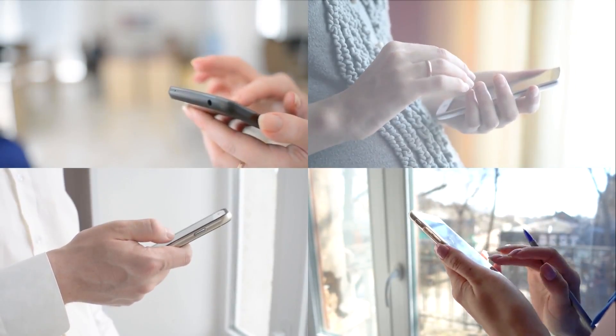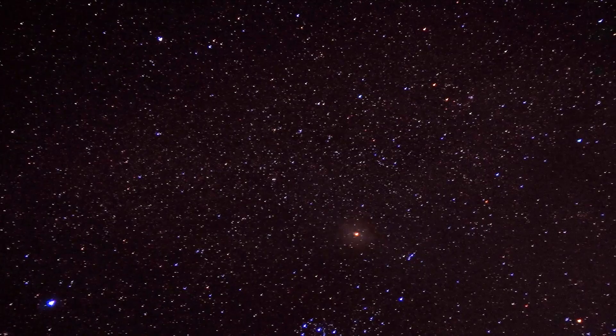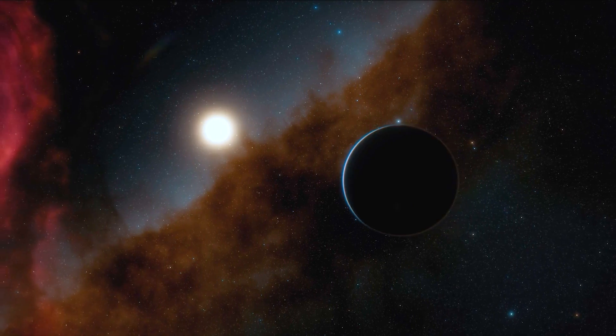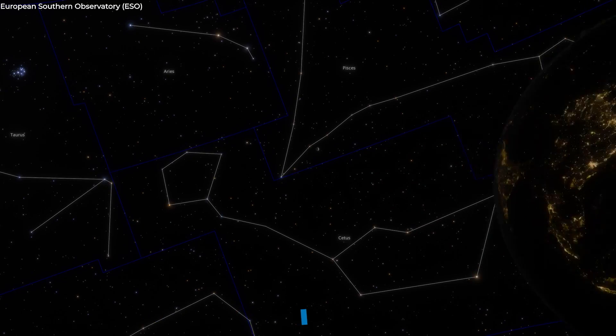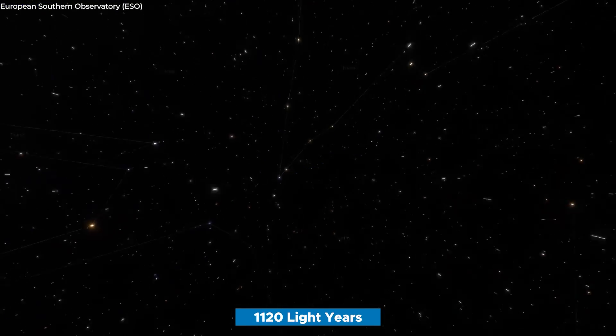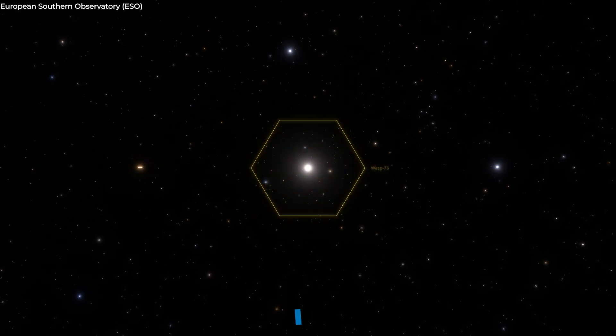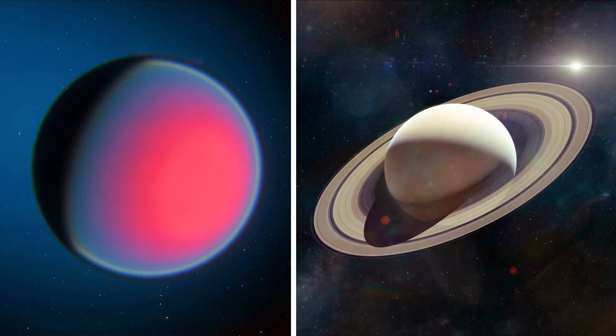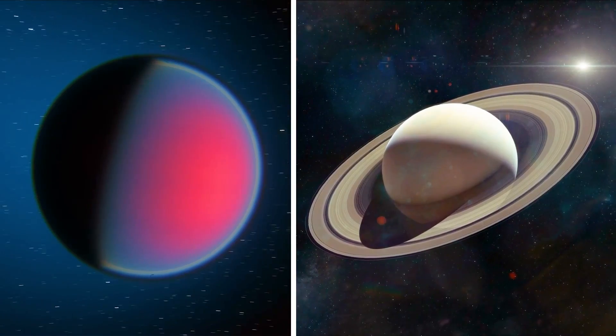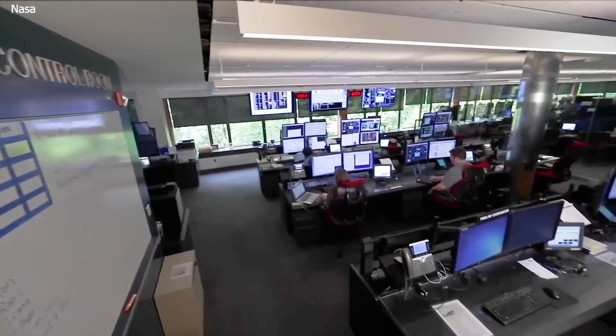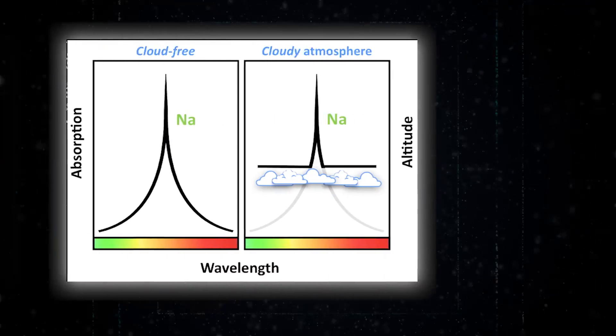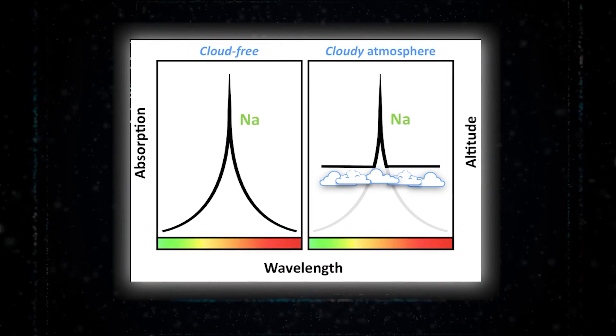Recently, a viral video is making these wild claims that Webb discovered city lights on WASP-96b, a gas giant planet orbiting a sun-like star that is 1,120 light-years from Earth. Its mass is around half that of Jupiter, but it is greater than that of Saturn.